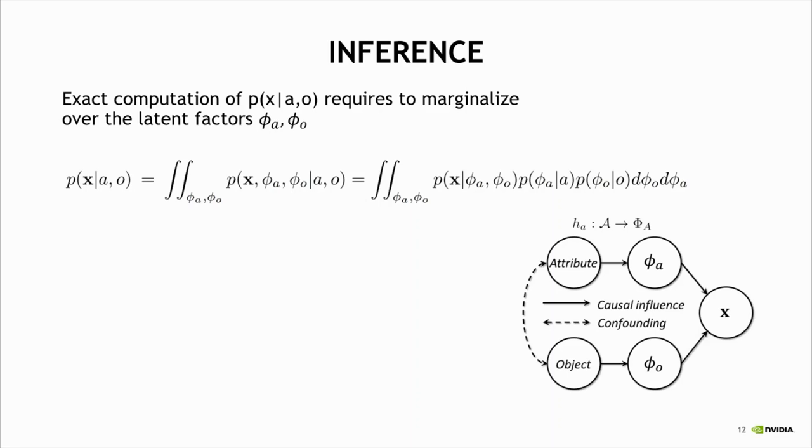So, how do we do inference in this model? To compute this conditional distribution exactly, we need to marginalize over the latent visual representations, these φ_a and φ_o, and to solve this nasty looking integral. And for that, we took a simple approximation.